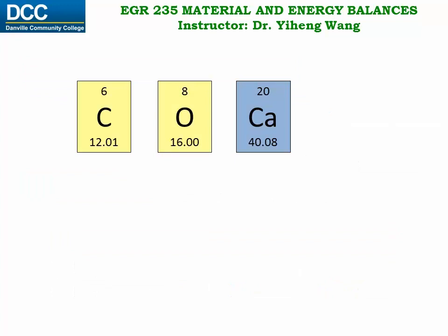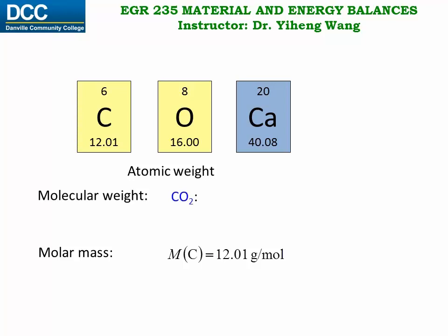Many periodic tables list the atomic weights for each element. For example, the atomic weight for carbon is 12.01, and its molar mass is 12.01 gram per mole. For compounds, the molecular weight can be determined through the composition. For example, for carbon dioxide molecule, each molecule has one carbon atom and two oxygen atoms. Therefore, its molecular weight can be calculated from the atomic weights of carbon and oxygen to be 44.01.